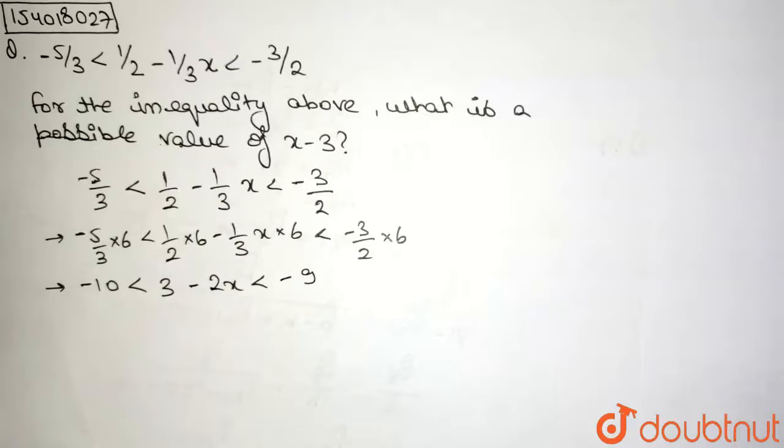As simple as that, right? So I have minus 10 is less than 3 minus 2x is less than minus 9. Now what do I do? I subtract 3 to eliminate this term from everything. This entire thing, I subtract 3.